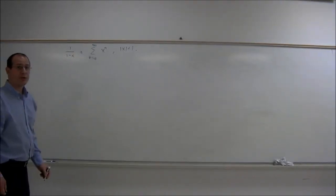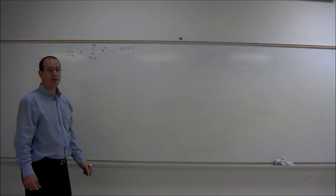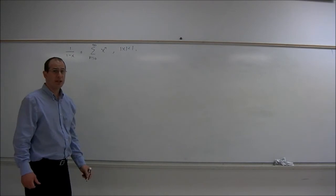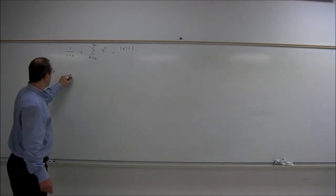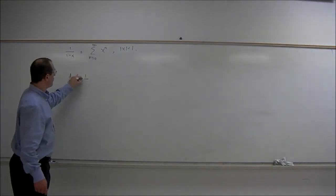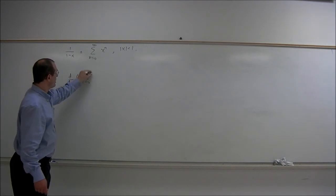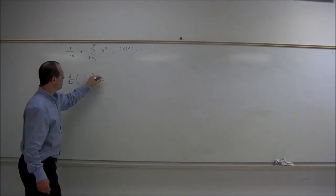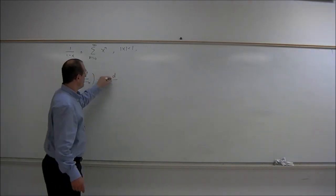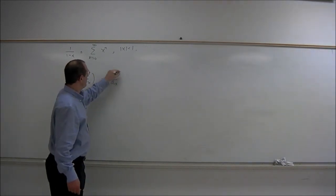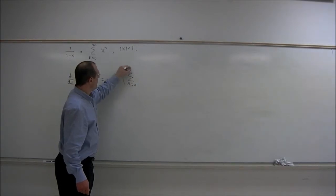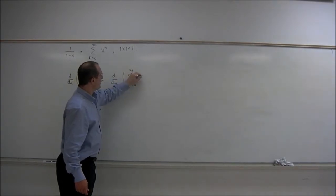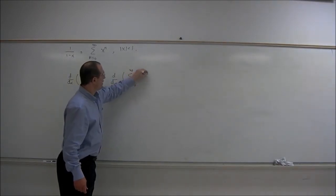Now what we're going to do next is we're going to differentiate both sides of this equation. So the derivative of 1 over 1 minus x is going to equal the derivative of the summation n equals 0 to infinity of x to the n.